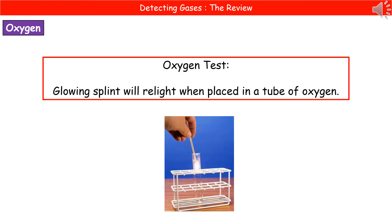The last gas test is for oxygen. When you have your tube with the unknown gas, take a glowing splint and hold it in the tube. If it's oxygen, the glowing splint relights.